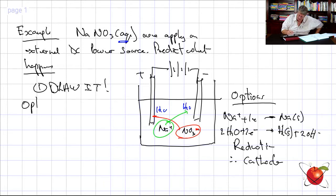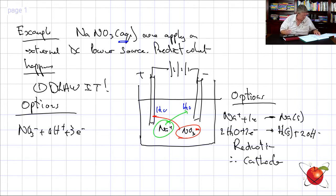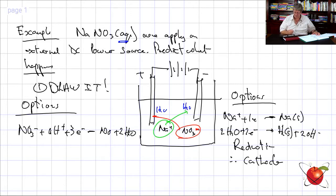On the other side, option one is the NO3- ion: NO3- + 4H+ + 3e- → NO + 2H2O. That reaction sits at +0.96 V on the table.